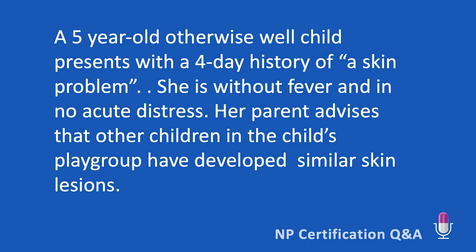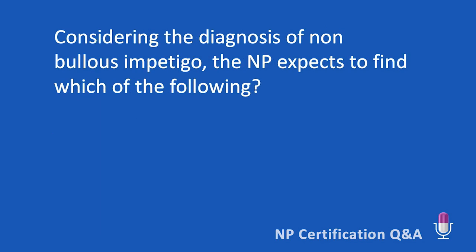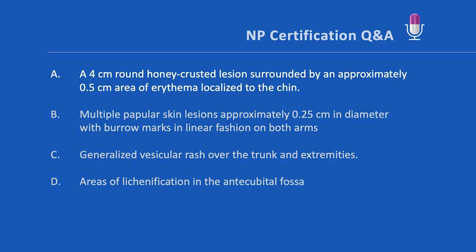The information gathered during assessment, with both subjective and objective information, forms the basis for arriving at the correct diagnosis. Non-bullous impetigo is a common superficial skin infection most often seen in children ages two to five years. This condition starts with papules that then evolve to pustules over a few days. The term non-bullous is used because there are not the large vesicles or blisters that would meet the criteria for the bullous form of the disease.